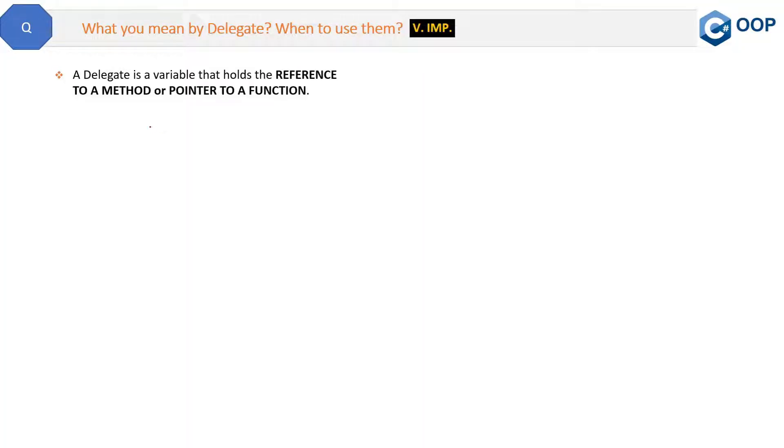A delegate is a variable that holds the reference to a method, or it's a pointer to a function. Both these statements are the same: reference to a method and pointer to a function. You can use any one of them in front of the interviewer. Now let's try to understand with the help of code.